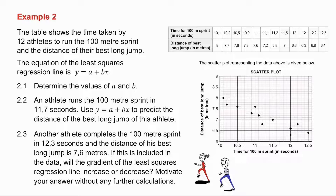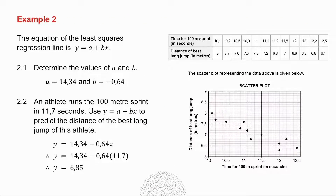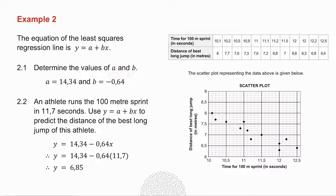Example number 2. Pause the video, try this one, and then we'll do it together. They've given you a set of data: the time for a 100m sprint and the distance of the best long jump. They ask you to determine the equation of the least squares regression line — simply get the value of A and B. Use your calculator with this data, press the buttons necessary, and you will get the values of A and B.